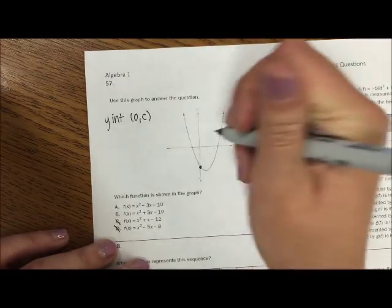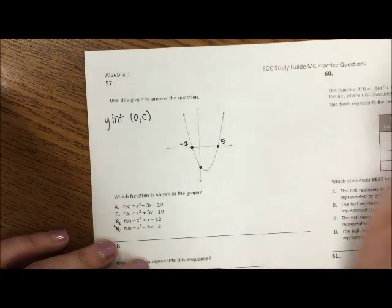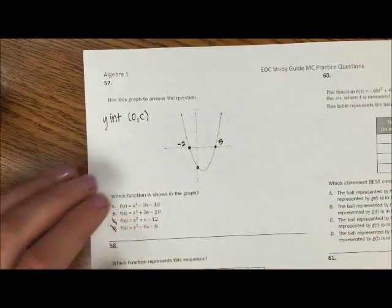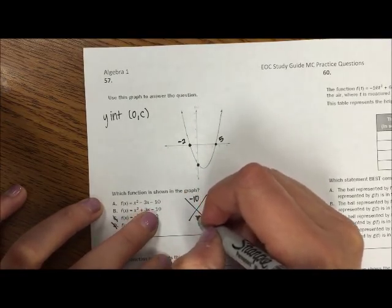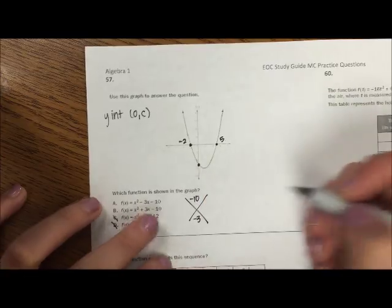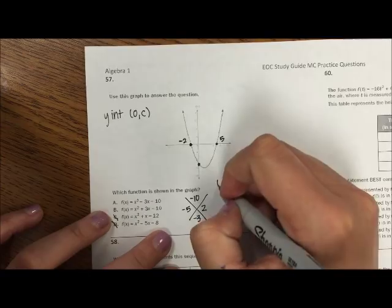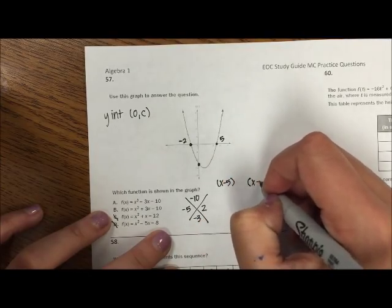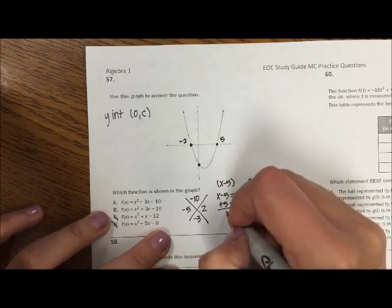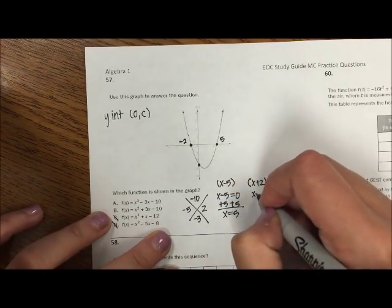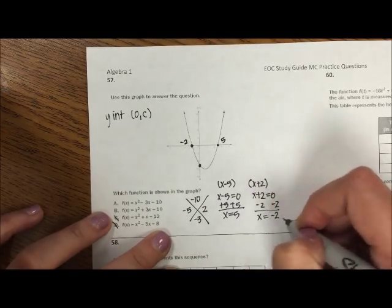Then I see that it has x-intercepts at negative 2 and at 5. So I can factor both of these. So the first one, negative 10 and negative 3. So my numbers would be negative 5 and 2. And set them equal to 0. And solve. So I get x as positive 5 and get x as negative 2, which is what I want.